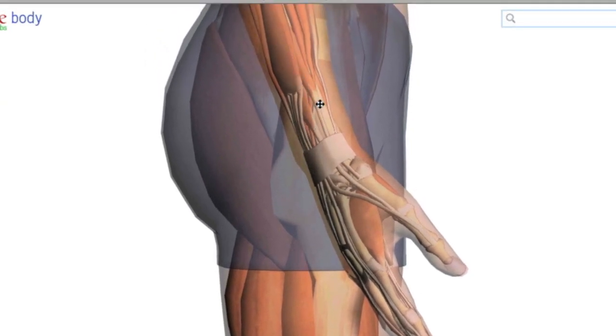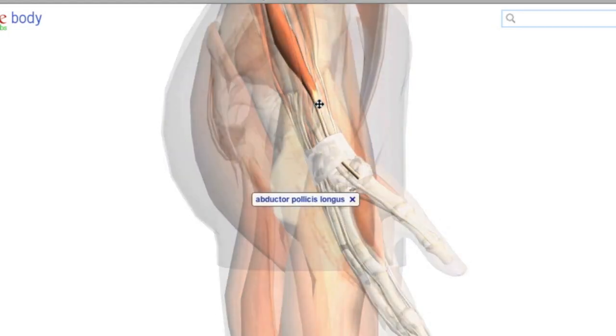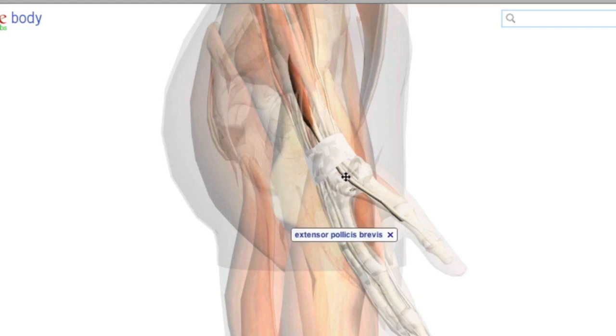The tendons involved in mommy thumb are the abductor pollicis longus and the extensor pollicis brevis. These two tendons lift the thumb away from the palm, so you can get a wider grip on something, like a baby.